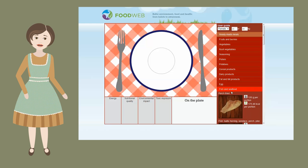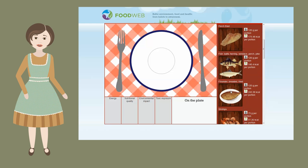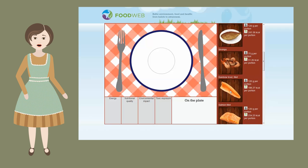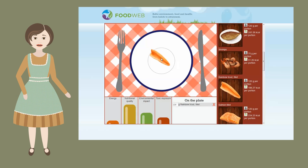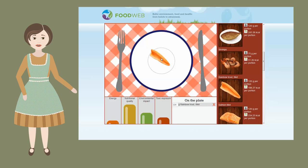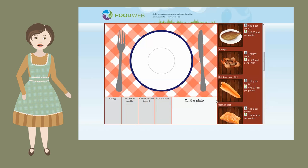If you click on the food item group, a list of food products will appear. You can see the amount of portion and energy content of every food product. Drag the food product to the plate in the box on the plate. You can see the name and weight of the food product. If you want to remove the food product from the plate, click on the red cross.